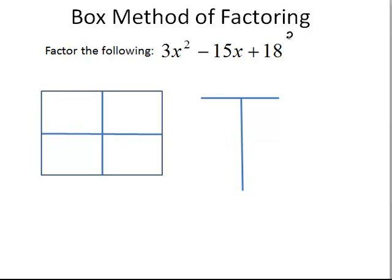So, rewriting, let's say we pull out a 3. Well, that's going to leave us with x squared minus 5x plus 6. So, we factor out a GCF.